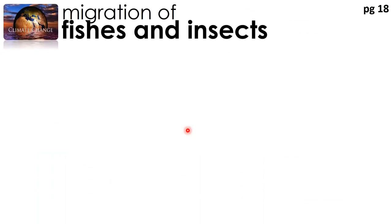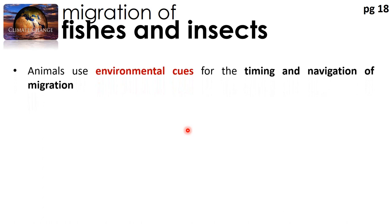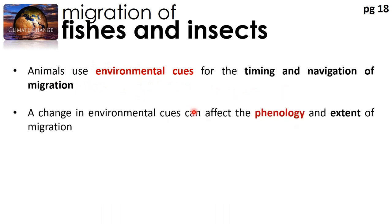Now let's talk about the migration of fishes and insects. Animals like fishes and insects all use environmental cues for the timing and navigation of their migration. Because global warming and climate change causes changes in all their environmental cues, it will affect their phenology and the extent of their migration.